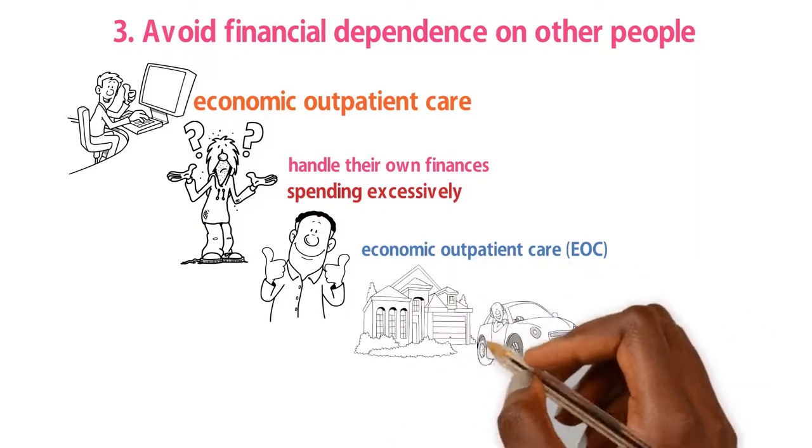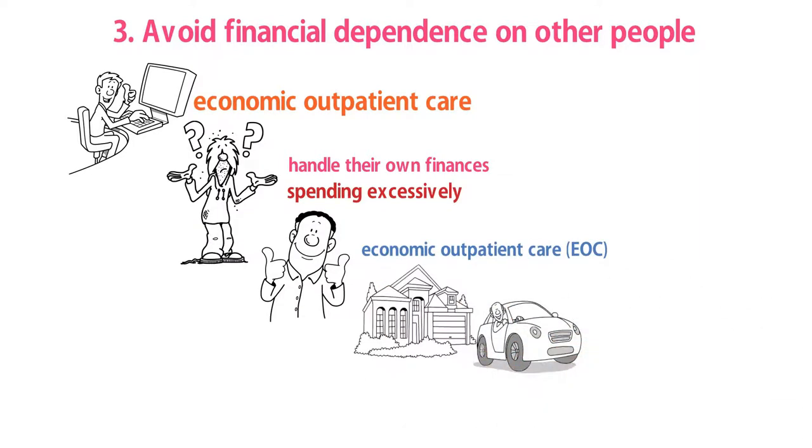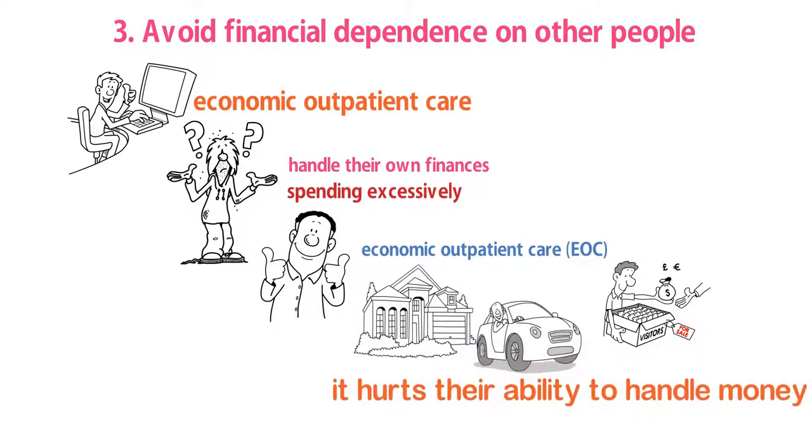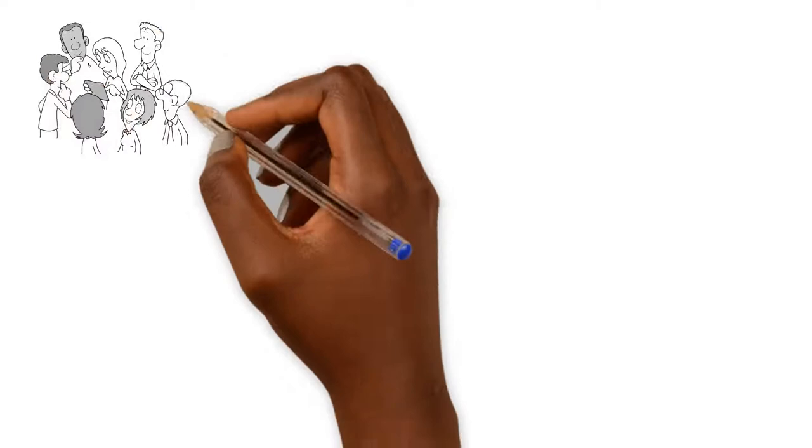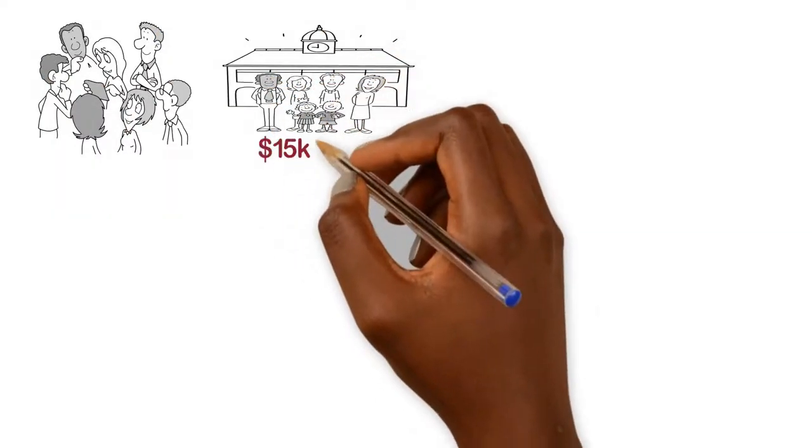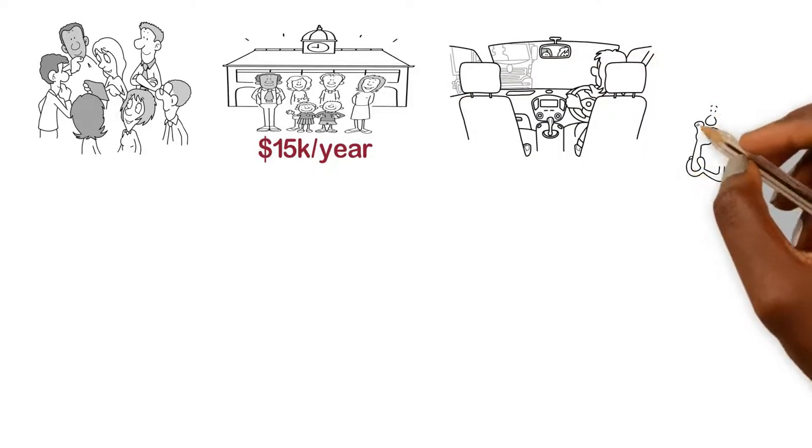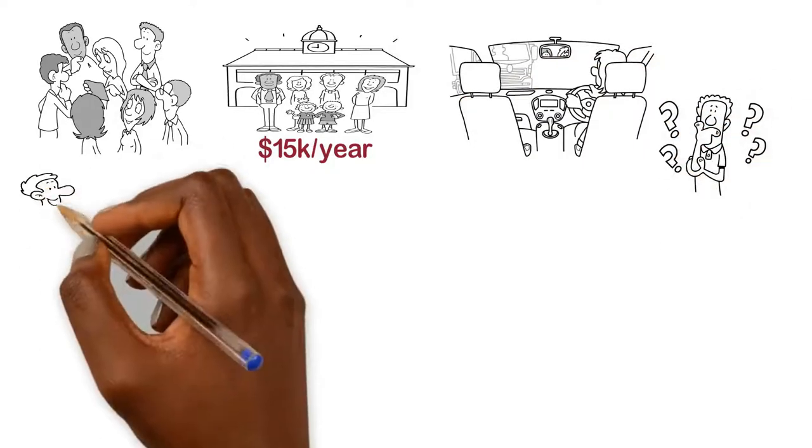As much as affluent parents mean well when they support their children with their own hard-earned money, the reality is it hurts their ability to handle money. Almost half of all wealthy Americans sponsor their children and grandchildren with over $15,000 a year, which leads to them having luxurious lifestyles which they technically can't afford.